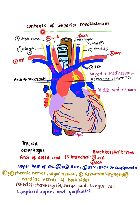Contents of Superior Mediastinum: You can see two tubular structures here — Trachea and Esophagus. Next, remember Arteries, Veins, Nerves, Muscles, Lymphoid organs and Lymphatics.